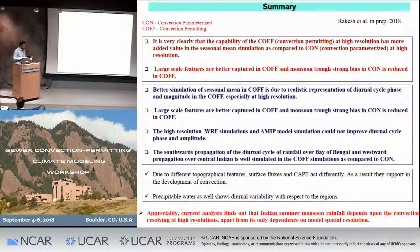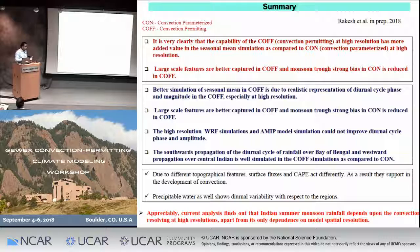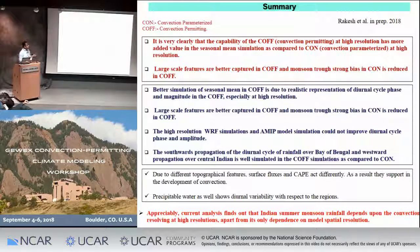This analysis shows that due to the better representation of the diurnal cycle, total rainfall is simulated much more accurately in the convection-off 6.25 km simulation. Therefore, Indian summer monsoon rainfall simulation is totally dependent upon both how convection is resolved and the model resolution. Thank you very much.